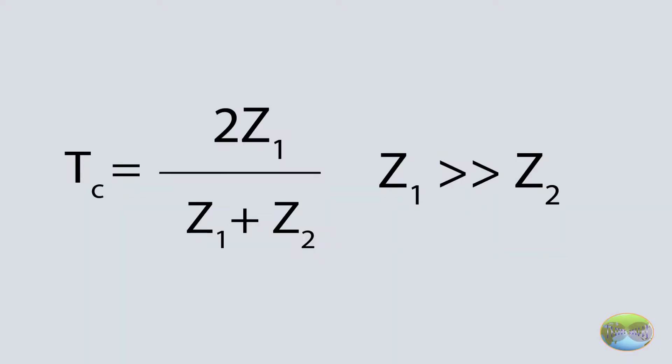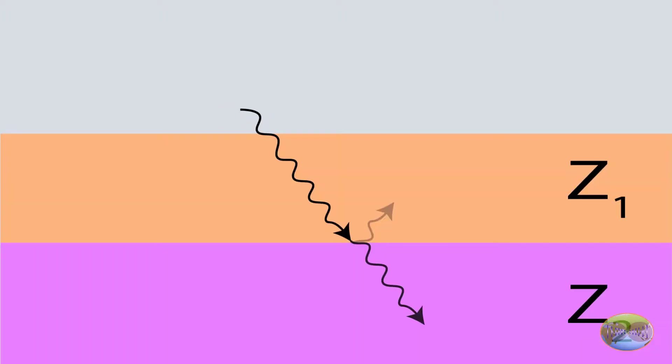And when impedance of first layer is much higher than the second layer, a large fraction of wave energy would be transmitted.